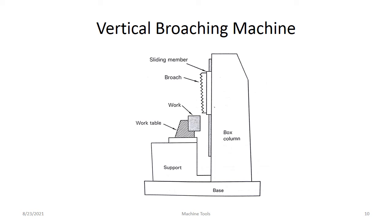The vertical broaching machine occupies less floor space compared to the horizontal broaching machine, and is more rigid as the ram is supported by the base. However, the vertical height of the machine can pose a problem with shaft floor ceiling height. In cases requiring a higher ceiling, the machine can be placed below the floor level, which helps the operator to work at factory floor level.